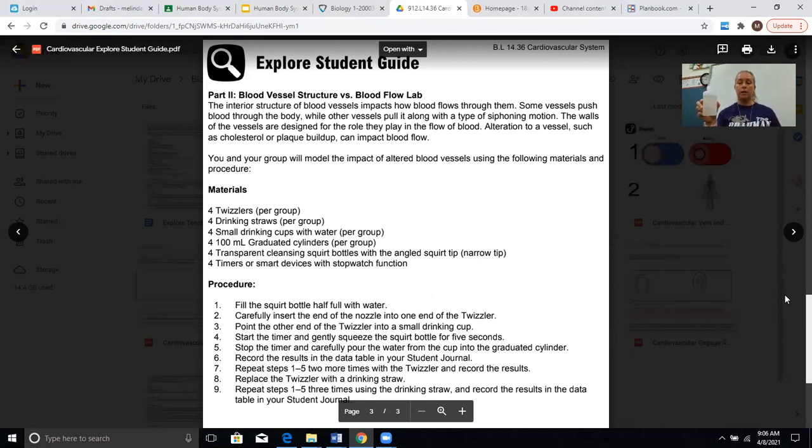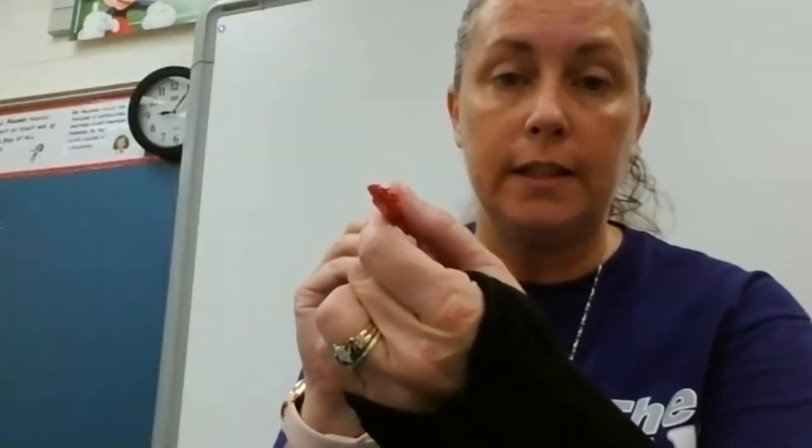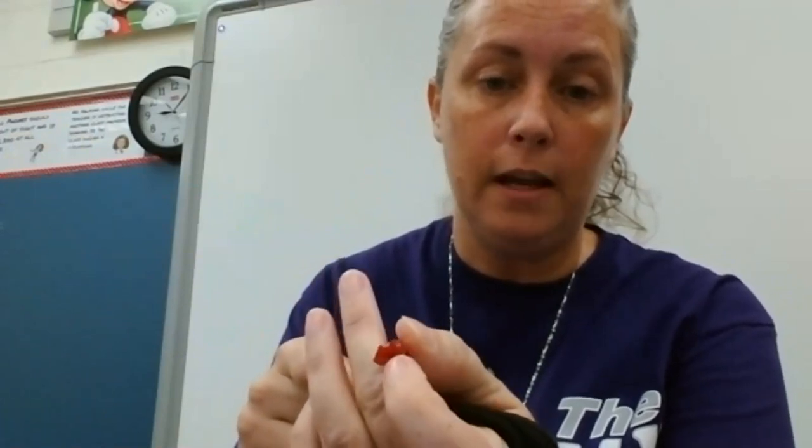And so it says fill the squirt bottle half full with water. So I have the squirt bottle here. And what it wants me to do is insert the end of the nozzle into one of the Twizzlers. Now, when you first get your Twizzler, I don't know if you can see, but there's really no hole. So what we need to do is we actually need to cut the Twizzler. And now you can see that there is a hole right here inside of it. And so I've already cut the other side, but you can see that this is a very, very narrow hole.